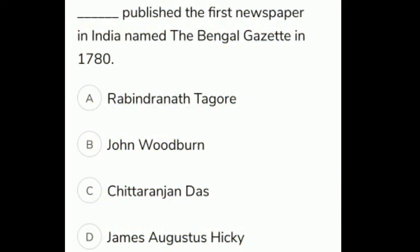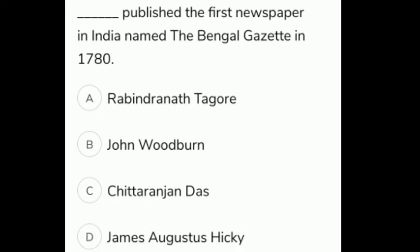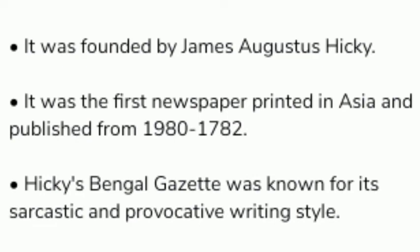Who published the first newspaper in India, named The Bengal Gazette, in 1780? The given options are A Rabindranath Tagore, B John Woodburn, C Chittaranjan Das, D James Augustus Hicky. The correct answer is option D, James Augustus Hicky. It was the first newspaper printed in Asia and was published from 1780 to 1782. Hicky's Bengal Gazette was known for its sarcastic and provocative writing style.